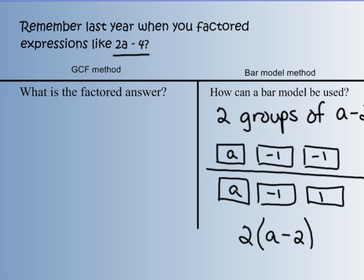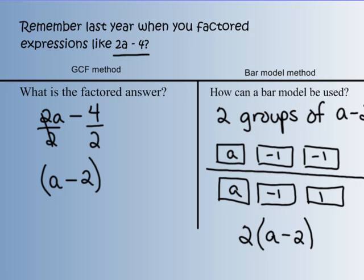To factor using the greatest common factor method, the greatest common factor is 2. So I would divide each term of my binomial by my greatest common factor, 2. 2a divided by 2 gives me an a, and negative 4 divided by 2 gives me negative 2. I put parentheses around that, because that's what my expression equals when I do this division. My common factor comes out in front of the parentheses. So I'm going backwards — we're undistributing the factor of 2 and putting it outside the parentheses. I have a factor of 2 and a factor of a minus 2 to give me 2a minus 4, factored correctly.